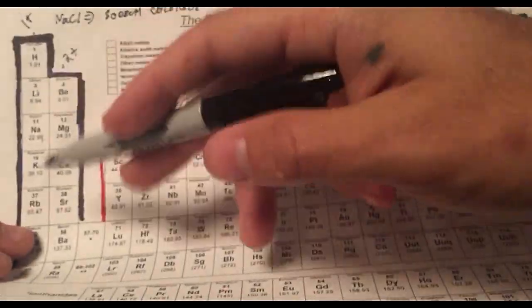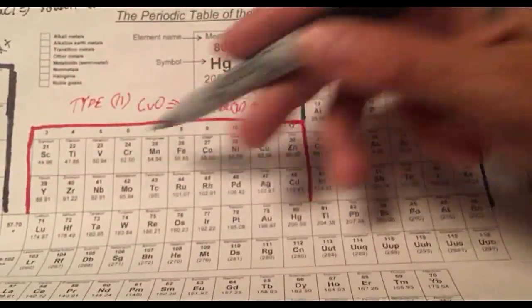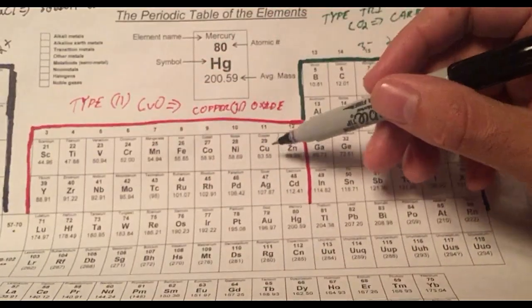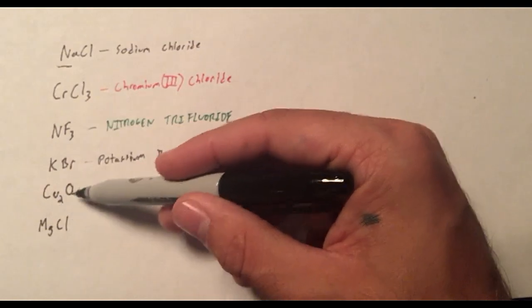So copper is not in group one or two. It's in the transition. And if it's in the transition, what does that mean? We've got to represent it with some Roman numerals.